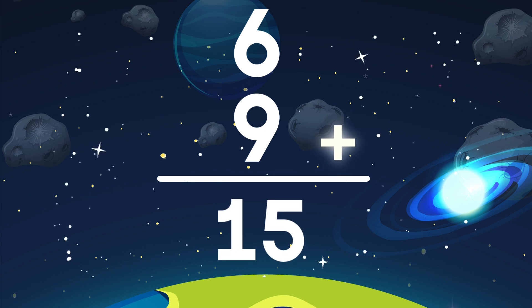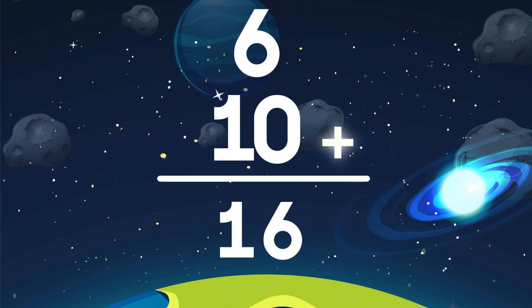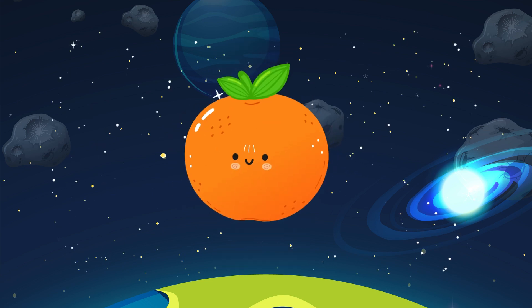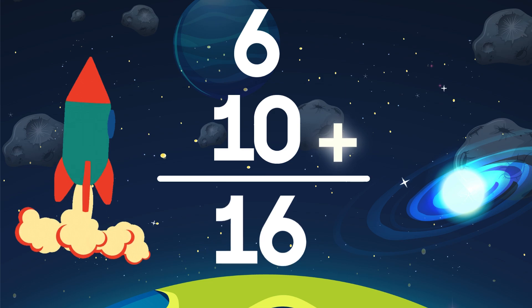Six plus nine is fifteen. Trampoline. Six plus ten is sixteen. Tangerine. Let's end with six plus ten is sixteen and start all over again.